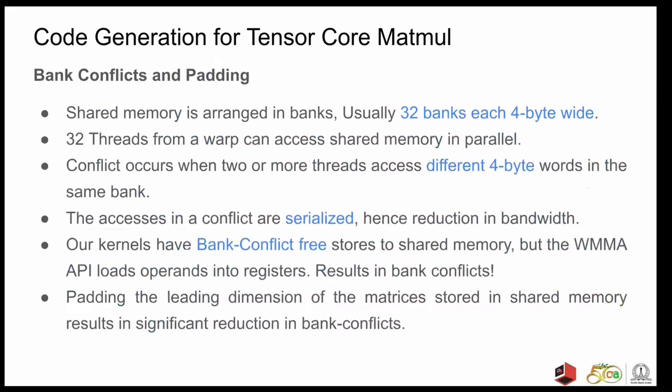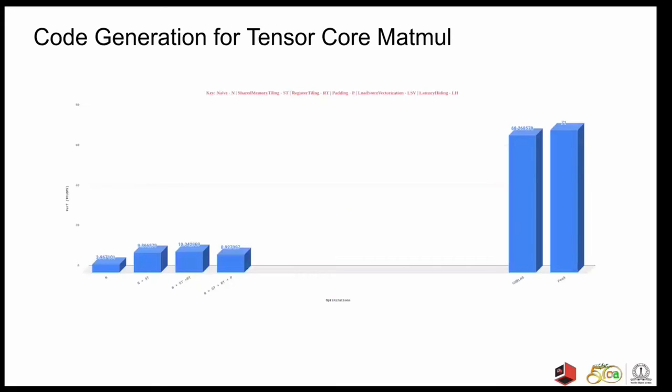As we are working with shared memory, we must know what bank conflicts are. So, shared memory is organized into 32 banks, each bank being 4 byte-wide. When threads in the same warp access different locations in the same bank, a bank conflict is set to occur. Bank conflicts are serialized and hence reduce the effective bandwidth that you can get from the shared memory. So, our kernels have bank conflict free stores to the shared memory, but we use the WMMA API to load the operands of matrix multiplication into the registers, which surprisingly resulted in bank conflicts. So, our general strategy to prevent bank conflicts is to pad the leading dimension of the matrices in shared memory in a hope that the mapping of the elements in the data banks change and you get some reduction in bank conflicts. And this actually worked. So, but this is not quite what we were hoping. The performance actually dropped to 8.9 teraflops.